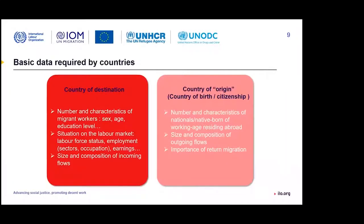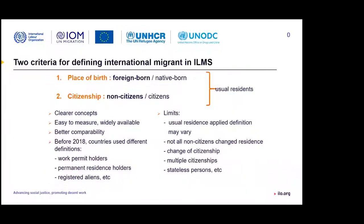To establish migrant status, we need information on both country of destination and country of origin. There are two criteria for defining international migrants: place of birth and citizenship. We want to disaggregate our stock indicators by migrant status — either by place of birth or by citizenship, depending on which data is available. Some countries might have both, some might have only one. If we can choose one, we will go with place of birth, as it is more relevant and helps to avoid duplicates.